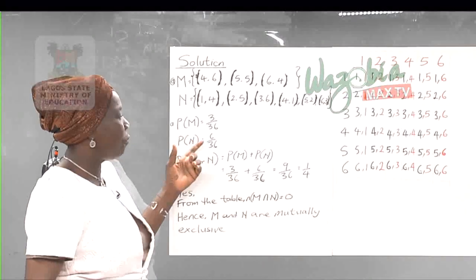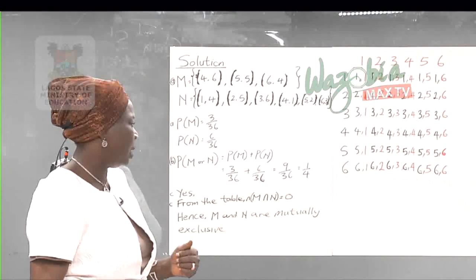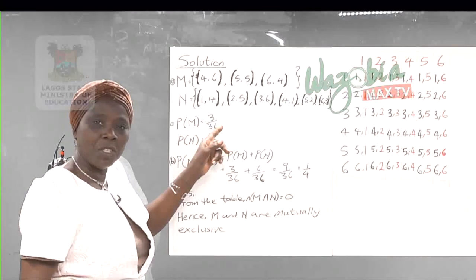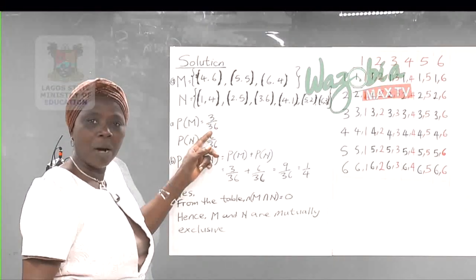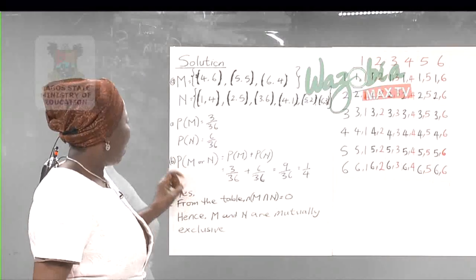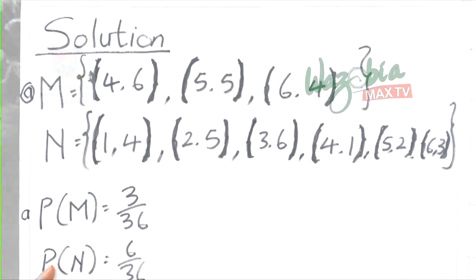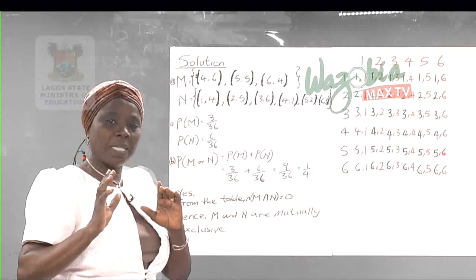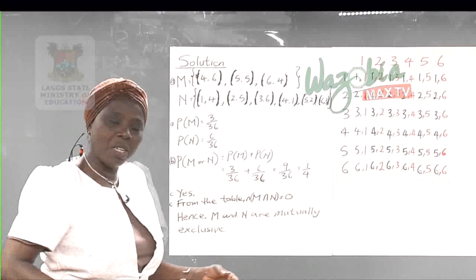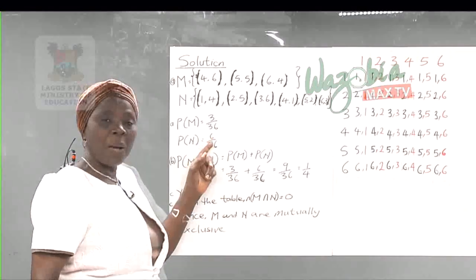Since M and N are mutually exclusive, the probability of M or N equals the sum of their separate probabilities. Probability of M is 3 over 36. It is advisable not to reduce this fraction yet, as we still need to add probabilities.